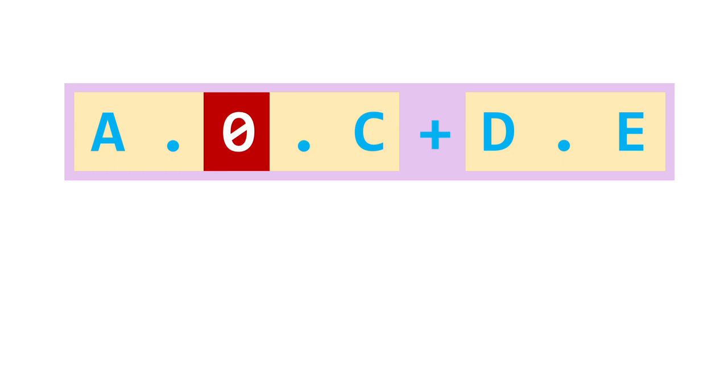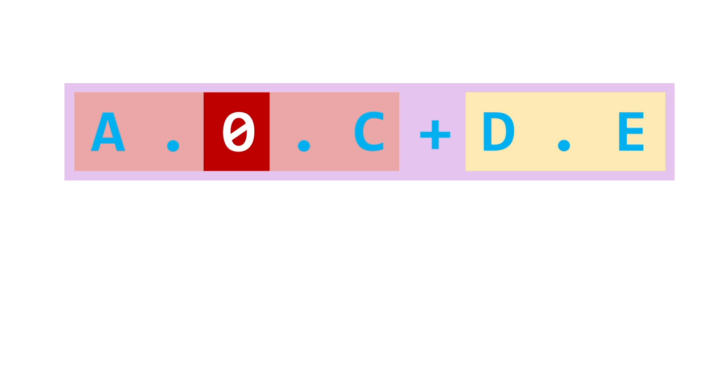Let's try an example where we use both AND and OR. The expression is A AND 0 AND C OR D AND E. Basically the expression means it could be D AND E, or it could be A AND 0 AND C. We treat the two sides of the OR as two separate expressions. Here we see that we've got an AND 0 on the left hand side, so the entire left hand side simplifies down to 0. Because the right hand side was separated by an OR, it is untouched. So the simplified expression is 0 OR D AND E.